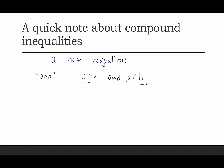We could take 'X is greater than A and X is less than B' and combine it into one big compound inequality: A is less than X is less than B. This only works for AND, and the assumption is that A is smaller than B — the transitive property needs to work. This also applies when we have the 'or equal to' as well.